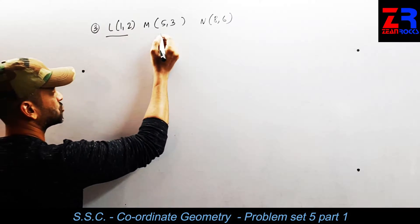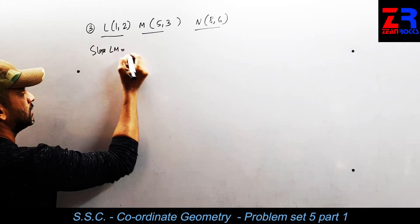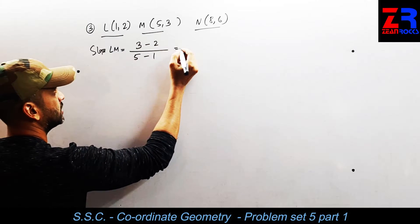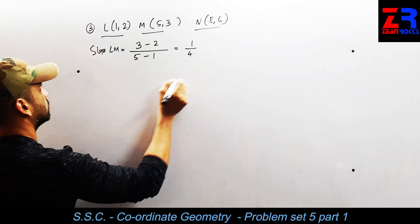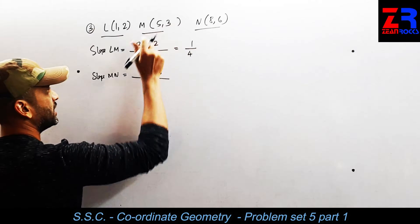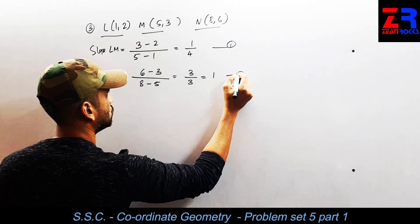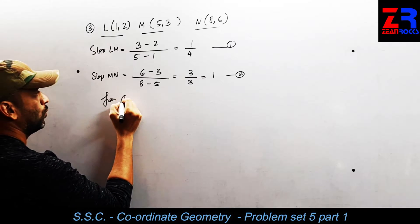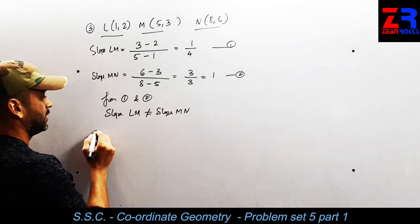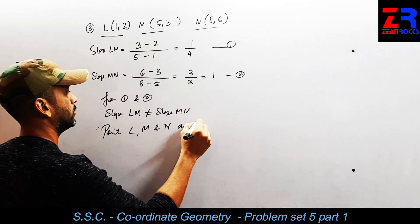This is question number 3. We are supposed to show that L, M, N are collinear. I am using the slope formula. Slope of LM equals second number minus second number upon first number minus first number, which gives 1 upon 4. Next, slope of MN: 6 minus 3 upon 8 minus 5 equals 3 upon 3, which is 1. From equations 1 and 2, slope of LM is not equal to slope of MN. Therefore points L, M, and N are non-collinear.